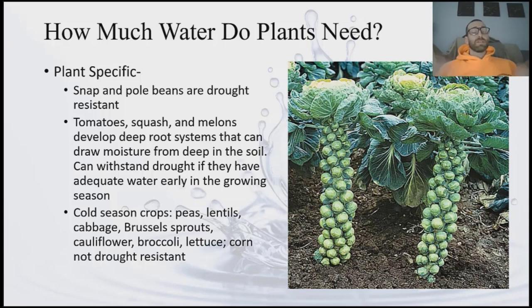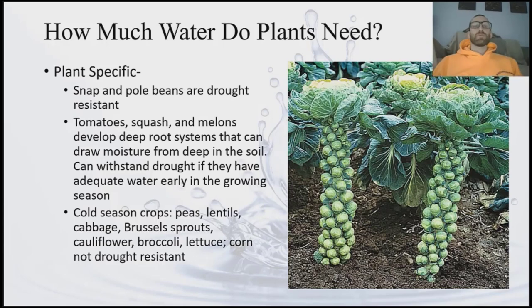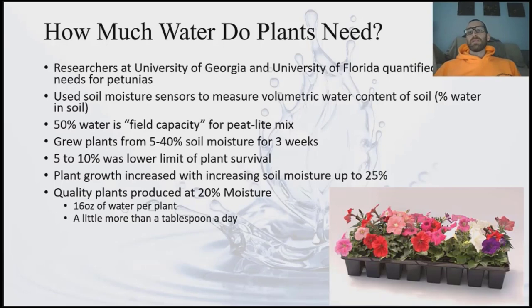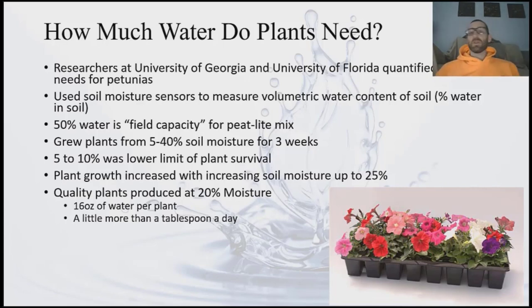Corn and lettuce have larger water requirements. We have general rules of how much water our plants require, but there is little data on quantified water requirements — like particular amounts in liters. We do have work done at the University of Georgia and the University of Florida where researchers quantified the water needs for petunias. They used soil moisture sensors to measure the volumetric water content of soil — essentially the percent of water in soil.